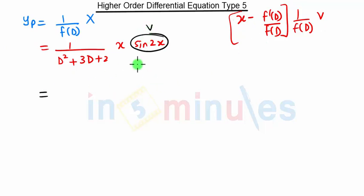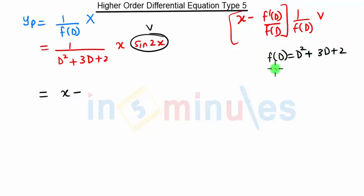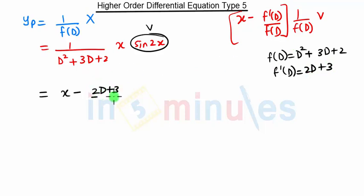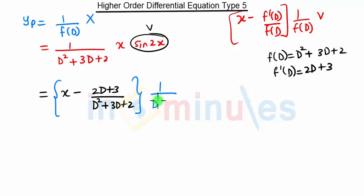In our case V is sine 2X. This part will be replaced by X minus F dash of D. Our F of D is D squared plus 3D plus 2, so F dash of D will be 2D plus 3. In the numerator we have F dash of D which is 2D plus 3, in the denominator we have F of D which is D squared plus 3D plus 2, and this term is multiplied by 1 upon F of D — that is 1 upon D squared plus 3D plus 2 — into V.